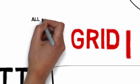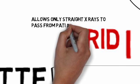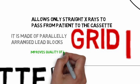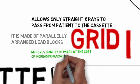This is the grid. Grid allows only straight X-rays to pass from the patient to the cassette. It is made up of parallelly arranged lead blocks. It improves the quality of the image at the cost of increasing radiation to the patient.